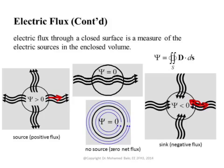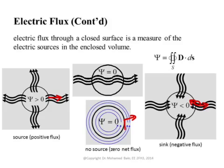The third case gives zero total flux, and has two examples. First, when there is no charge inside the volume, the flux flowing in equals the flux flowing out, so the net flux is zero. Second, when the field lines are tangential to the surface, D is perpendicular to dS, so D dot dS equals zero at every point and there is no net flux out of the surface.